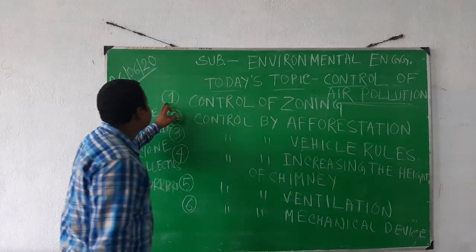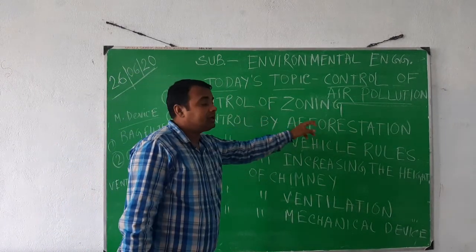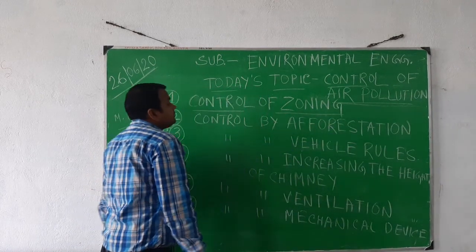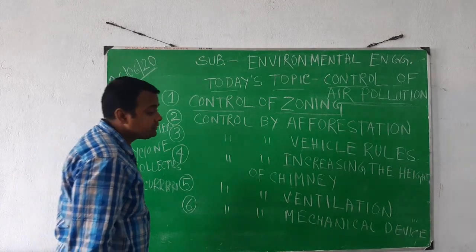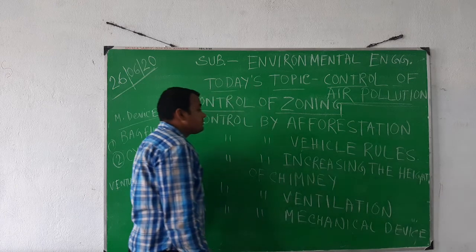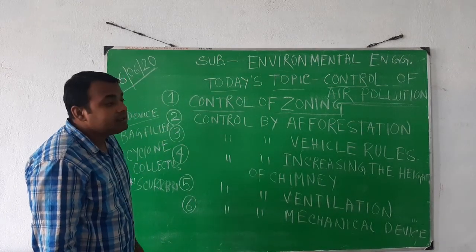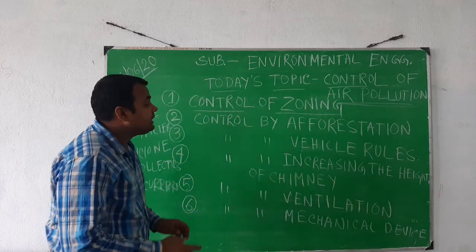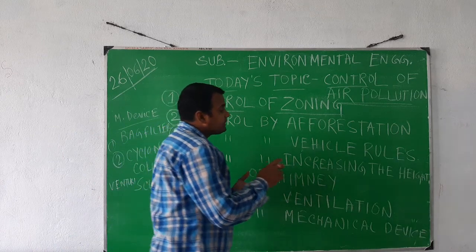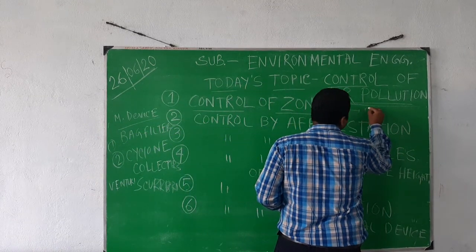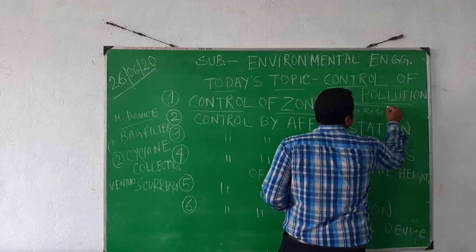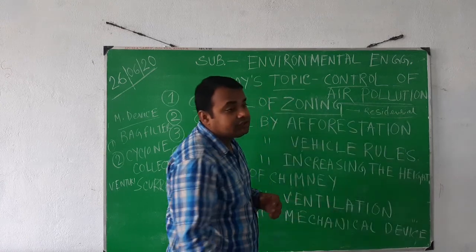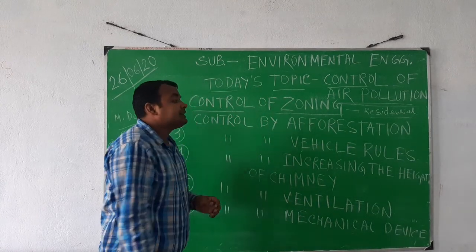The first point is control by zoning. In a city, urban area, or village area, the area is divided into many zones. This includes the residential zone and the industrial zone.